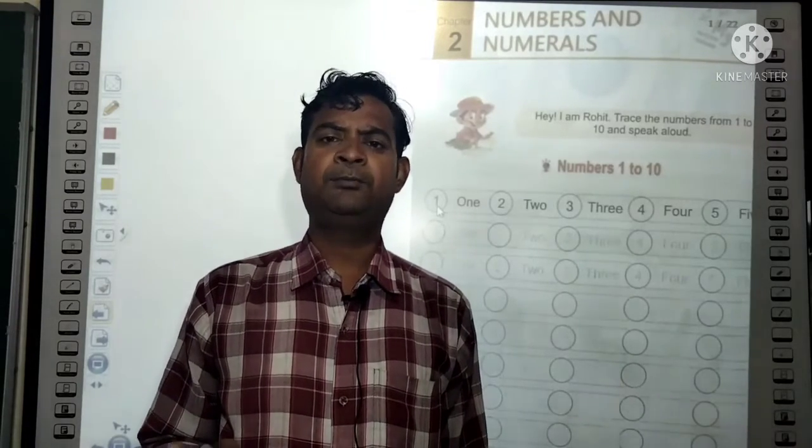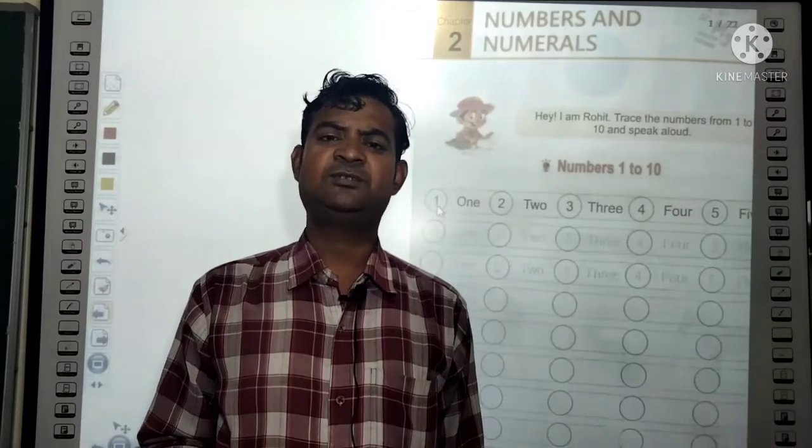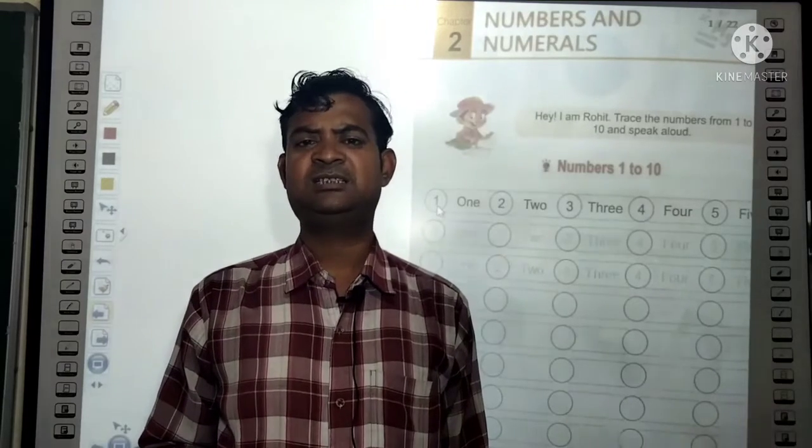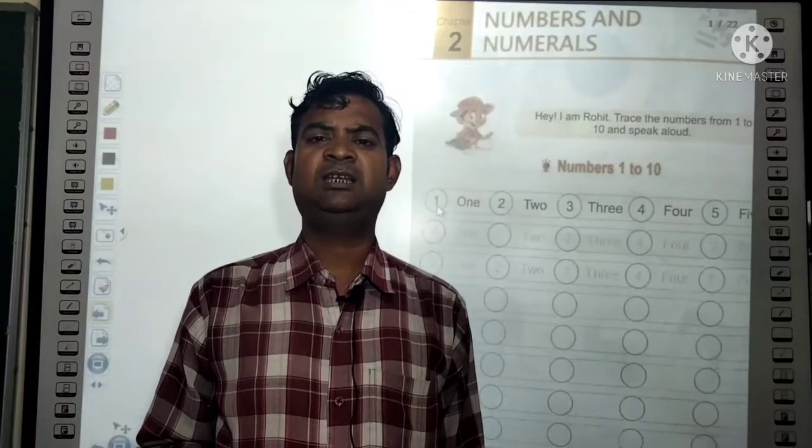The number 4 — its name is F-O-U-R. The number 5 — its name is F-I-V-E. The number 6 — its name is S-I-X. The number 7 — its name is S-E-V-E-N.